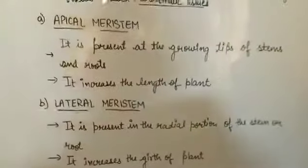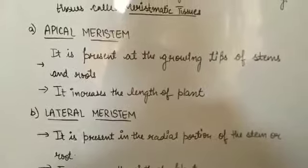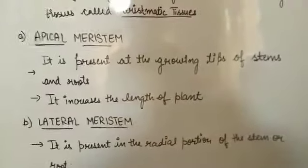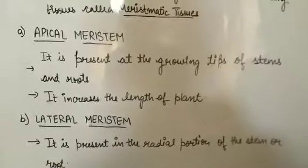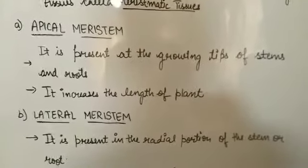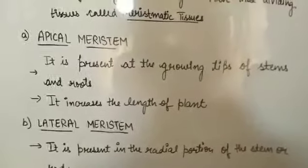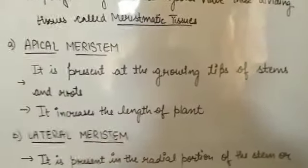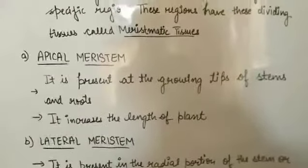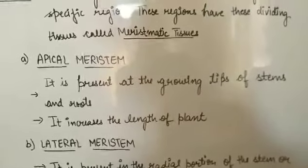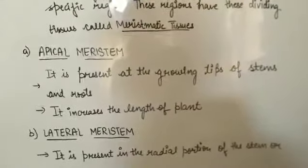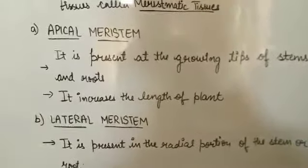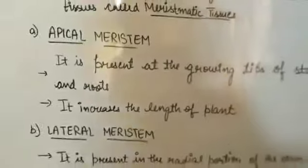Apical meristem is the meristematic tissue present at the growing tips of stems and roots. It increases the length of the plant. The apical meristematic tissue is present at the tips of roots and stems, and by dividing there it helps roots to grow and increases the length of the stem. Overall, apical meristematic tissue is responsible for the increment in the length of the plant.